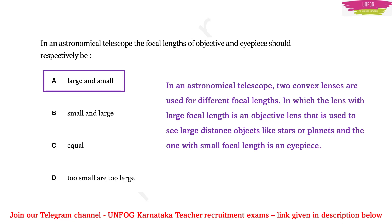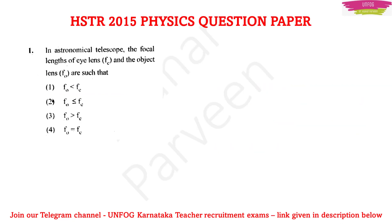With a similar concept, we have question number 1 from the HSTR 2015 question paper: In an astronomical telescope, the focal lengths of the eye lens and object lens are such that — the concept used to answer this question will be the same as what we have discussed.